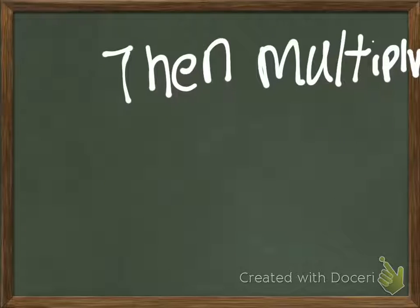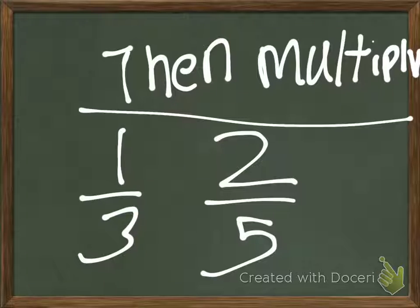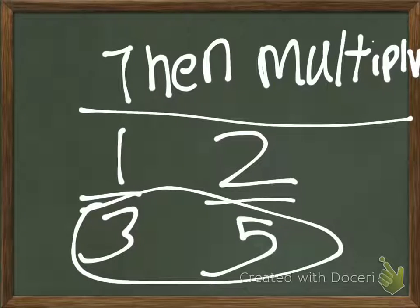Then, you multiply one-third and two-fifths, but you do not multiply the bottom.